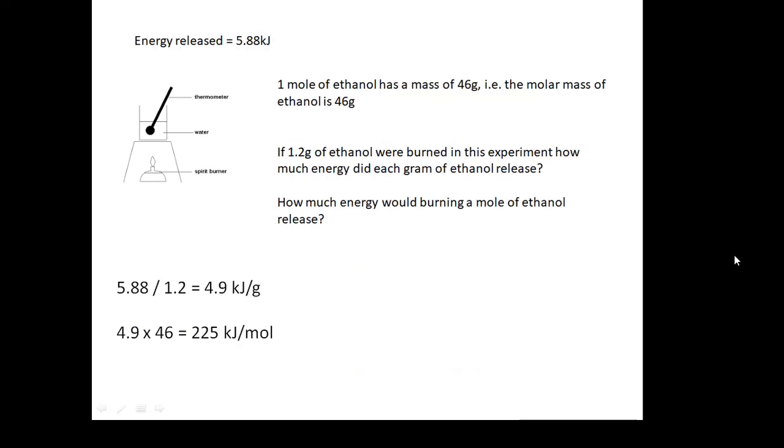What you will be asked to do is to work out the energy released per gram, and then from that, how much energy is released per mole. We're working out the energy per mole of the fuel. One mole of ethanol is 46 grams. The molar mass of ethanol is 46. If 1.2 grams of ethanol were burned, how much energy did each gram get? That would be 5.88 divided by 1.2 is 4.9 kilojoules per gram. Then how much energy would you get from burning a mole of ethanol? If it's 4.9 kilojoules per gram, you would multiply that by 46. And that would give 225 kilojoules per mole. So that's how much energy we would get, according to our experiment, from burning a mole of ethanol.